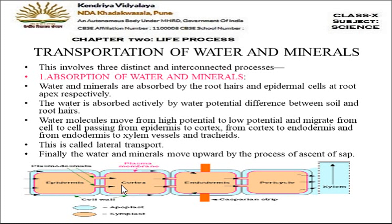When epidermal cells absorb water they swell up and exert pressure on the next cell, moving water to the cortex. That cell swells and exerts pressure on the endodermis, then onto the pericycle, and the water finally reaches the xylem. This movement from soil through epidermis, cortex, endodermis, to xylem is called lateral transport, as water moves in a lateral direction.